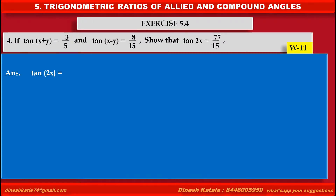The required ratio tan(2x) is equal to tan((x+y)+(x-y)), by arranging 2x as (x+y)+(x-y). Using the formula of tan(a+b), that is tan(a) + tan(b) upon 1 minus tan(a) into tan(b).